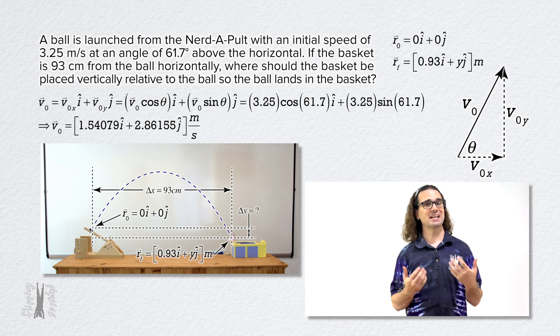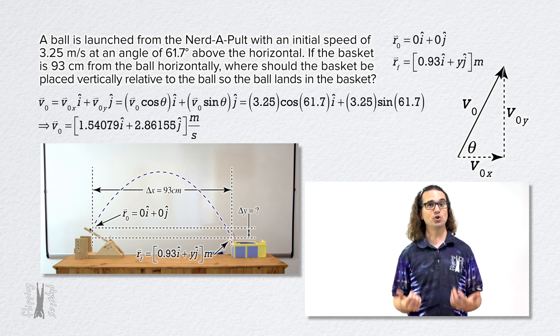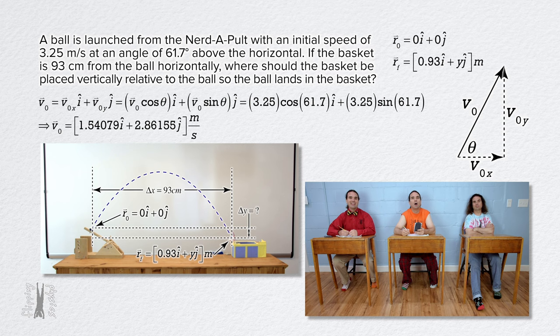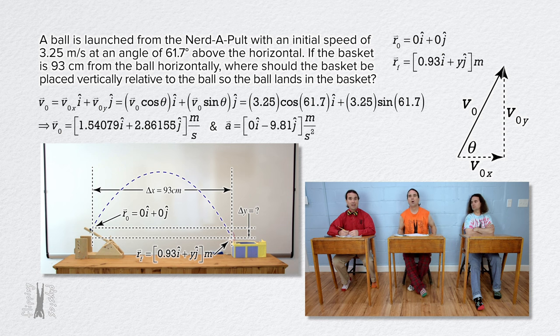Billy, please give me the acceleration of the ball using unit vectors. Absolutely. Okay, the acceleration of any object in projectile motion is 9.81 meters per second squared down. Objects in projectile motion have no acceleration in the x direction, so 0 times unit vector i plus negative 9.81 times unit vector j meters per second squared. Thank you, Billy.